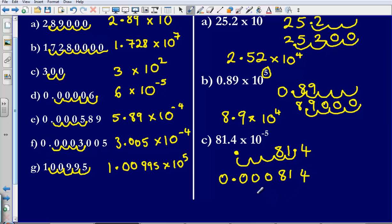Then to turn this into a number that is written in standard form, I put my decimal point after the first number that is not a zero. So it's going to be 8.14 times 10.